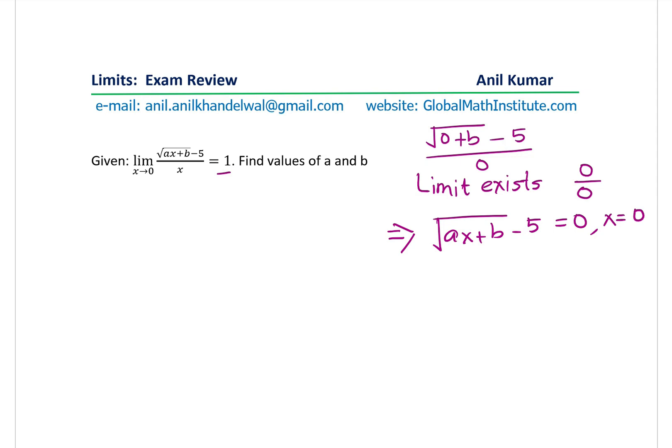So that gives you the condition that square root of b is equal to 0. And that gives you the condition that b equals to 25. So we do get the value of b, which should be 25. And now we need to find the value of a. This is part one.